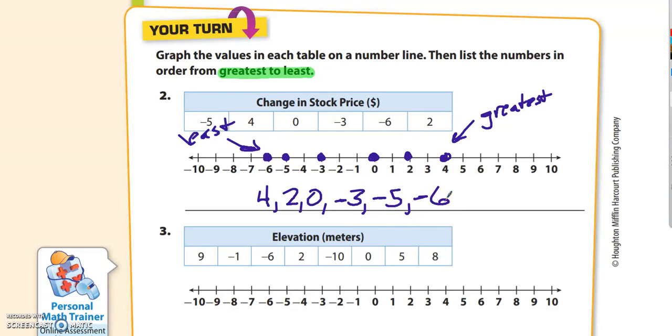And we've got one more to do. Going to do 9 is positive, negative 1, and negative 6, and positive 2, negative 10, 0, 5, and 8. I'm going to double check something real quick. I'm just going to count and make sure I got all of them. 1, 2, 3, 4, 5, 6, 7, 8. So that's just one little safety measure to make sure I got them all.